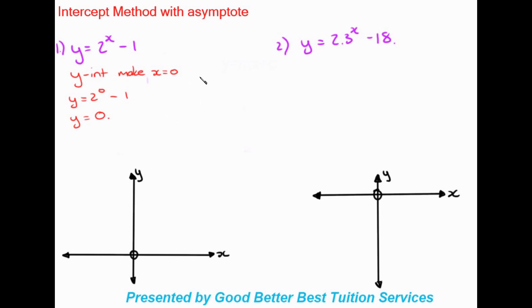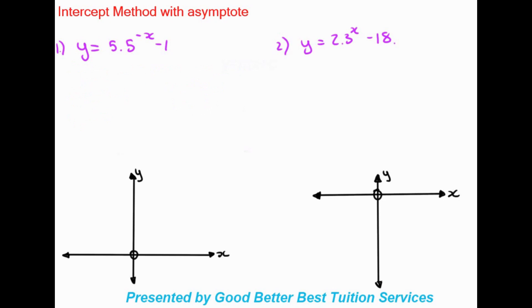To find the x-intercept, we make y = 0: 0 = 2^x - 1, so 1 = 2^x. This method involves using the intercept method only when dealing with asymptotes. In some cases you may not be able to find the answer — if you hit a hiccup, fall back on the table method, as you can use the table method to plot any equation.